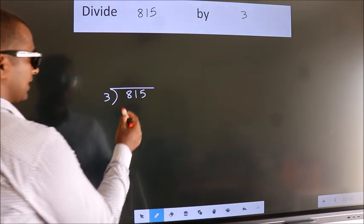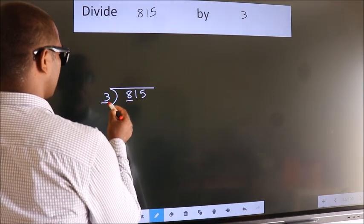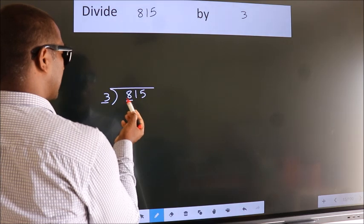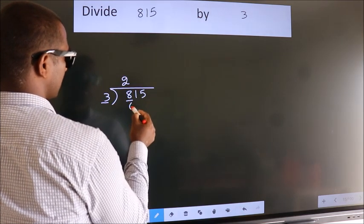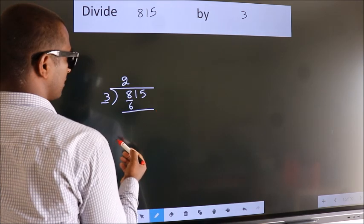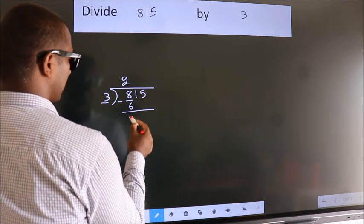Next, here we have 8. Here 3. A number close to 8 in 3 table is 3 twos, 6. Now we should subtract. We get 2.